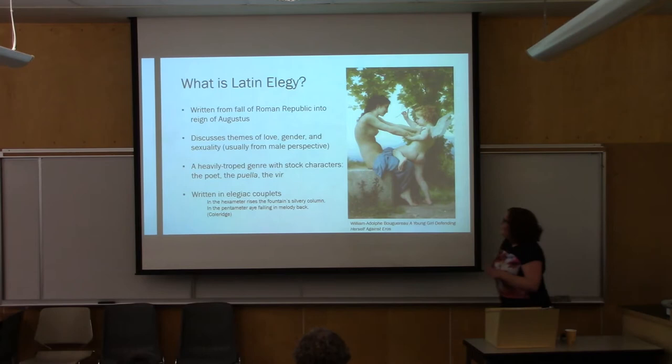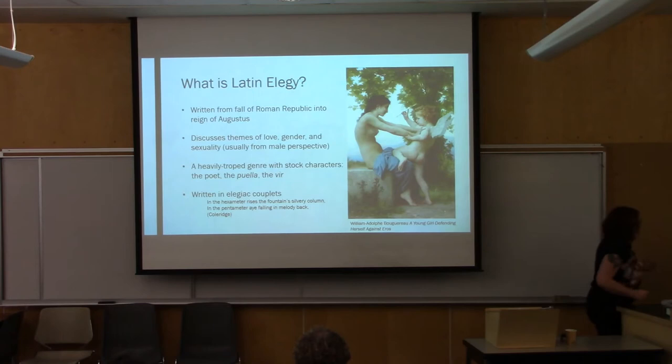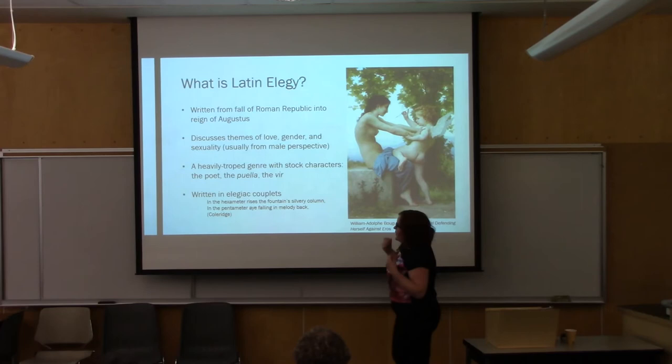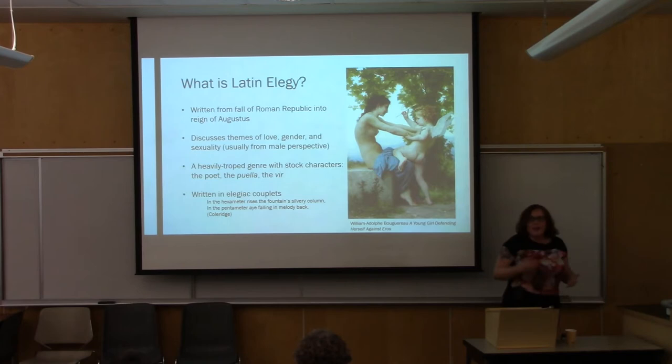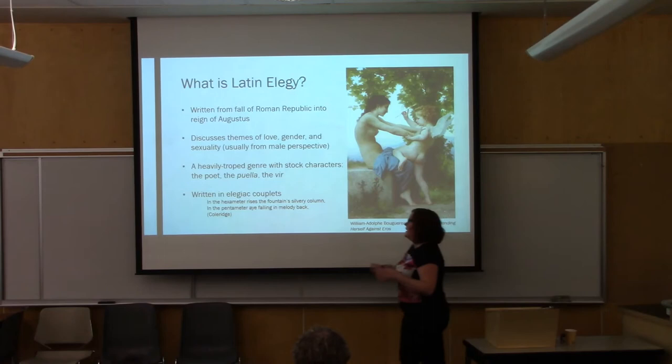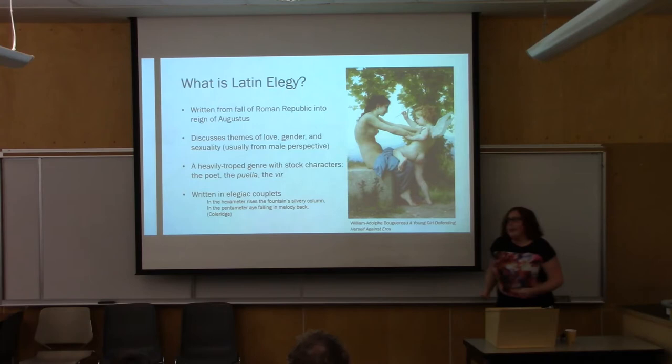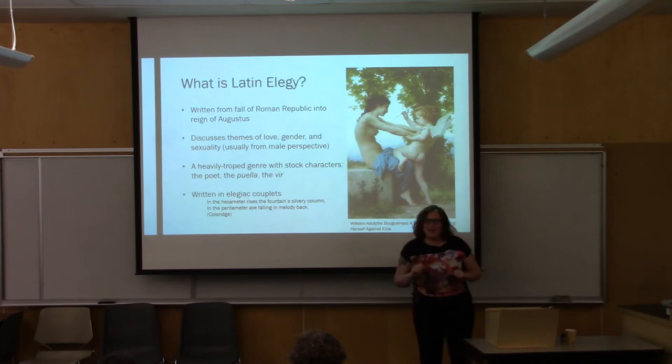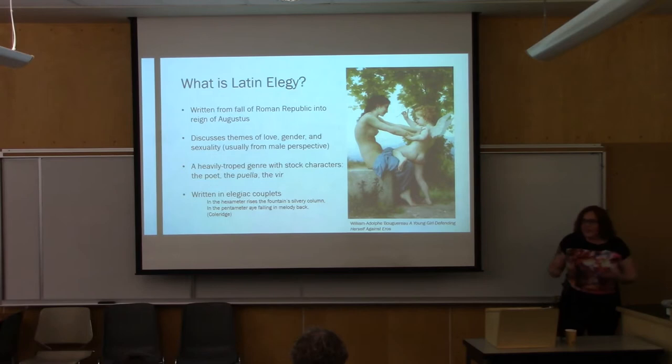Turning to Latin elegy — I know there are undergrads here and people who aren't classicists, so I'm going to quickly summarize it as a form. It's one of my favorite forms of literature because it's fascinating and layered. It's really written only in a very limited period of time — from the fall of the Roman Republic and into the reign of Augustus — really only a period of 60 years as it's being produced. It focuses on themes of love, gender, and sexuality, largely written from a male perspective, though not exclusively. And it's replete with tropes, including stock characters.